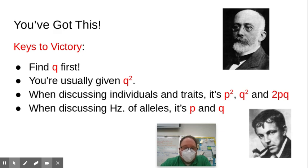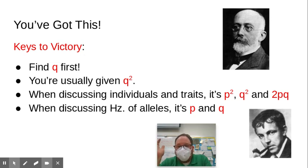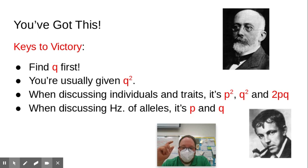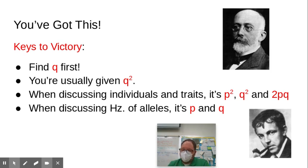Keys to victory: find Q first, always. Know that it's usually q squared. When talking about individuals and the traits they possess, since they've got two alleles, you're looking for p squared, 2pq, and q squared. When talking about frequency of the alleles, it's p and q. That's it, folks. Work on that Pogil. When we come back, we'll do some other practice with this and get into some chi-square review. Hope you have a great break — take care of yourselves, and we'll see you later.